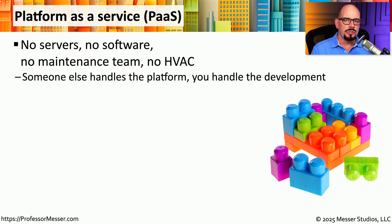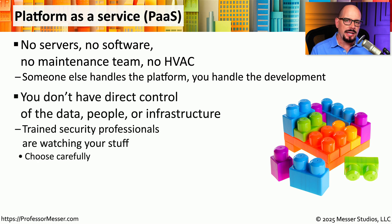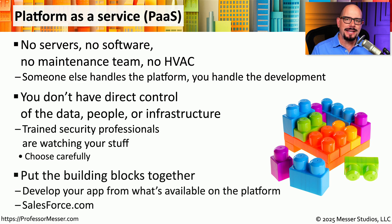A deployment model in the middle ground between infrastructure as a service and software as a service is one we refer to as platform as a service, or PaaS. Platform as a service doesn't require you to maintain any operating systems, and you don't have to have your own data center, but you do have to work on building the application that will run on this particular platform. This is an interesting hybrid because you still have to write the application, but the platform you're using to write and run this software is all operating on the platform used by the PaaS provider. You can think of piecing together different modules of an application like building blocks — you determine how these building blocks are arranged and what they will provide, but it's your responsibility to put all of these blocks together in a way that makes sense for you.